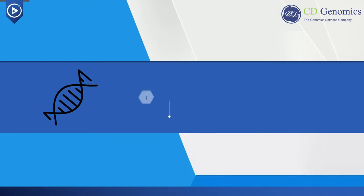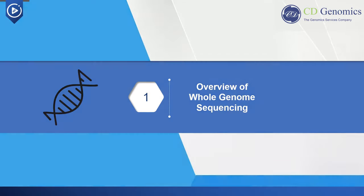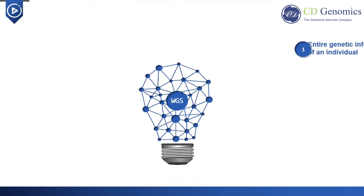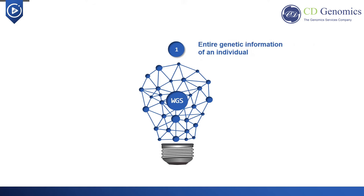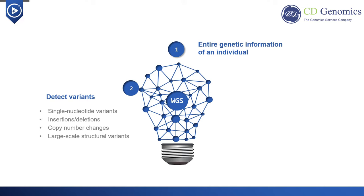Let's start with the overview of whole genome sequencing. The genome of each individual organism contains its entire genetic information. Whole genome sequencing is a powerful technology that helps researchers obtain the entire genetic information of the genome, and reveals the complexity and diversity of the genome. Whole genome sequencing can detect variants, including single nucleotide variants, insertions or deletions, copy number changes, and large-scale structural variants. Whole genome sequencing can be divided into de novo sequencing and resequencing, based on whether there is a reference genome.